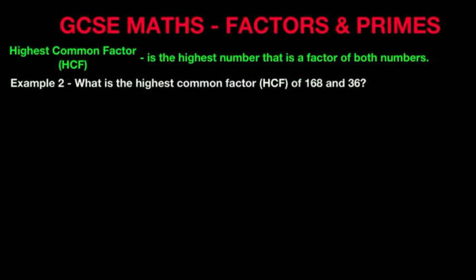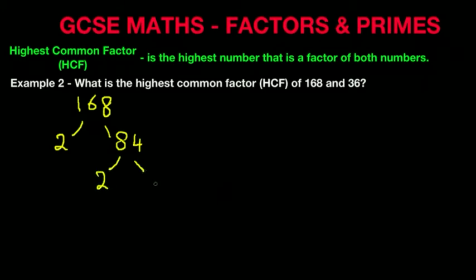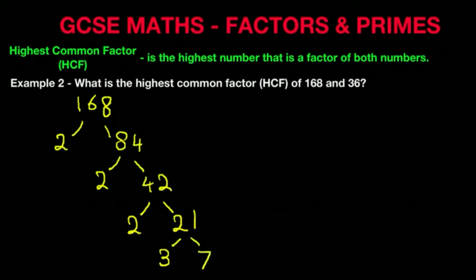Example 2: What is the highest common factor of the numbers 168 and 36? Now remember the workings out are crucial. We're going to answer this question using the factor tree. The first one we've already done, so let's go through this relatively quickly. 168 — we've done this in the previous example. We get 2, 2, 2, 3, and 7 as the prime factors, which we circle.